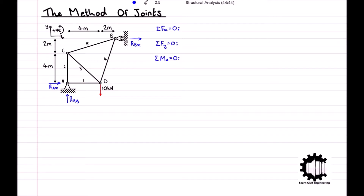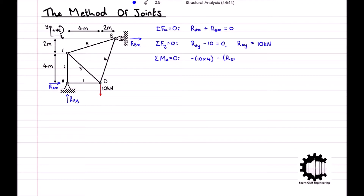Taking the x-coordinate direction to be positive, the sum of all horizontal forces gives rAx plus rBx equals zero. For the sum of all vertical forces, taking the y-coordinate direction to be positive, we have rAy minus 10 equals zero, so rAy equals 10 kN. Taking the sum of all moments relative to node A, with anti-clockwise rotation positive, we get negative 10 times 4 minus rBx times 6 equals zero, giving rBx equal to negative 6.67 kN.